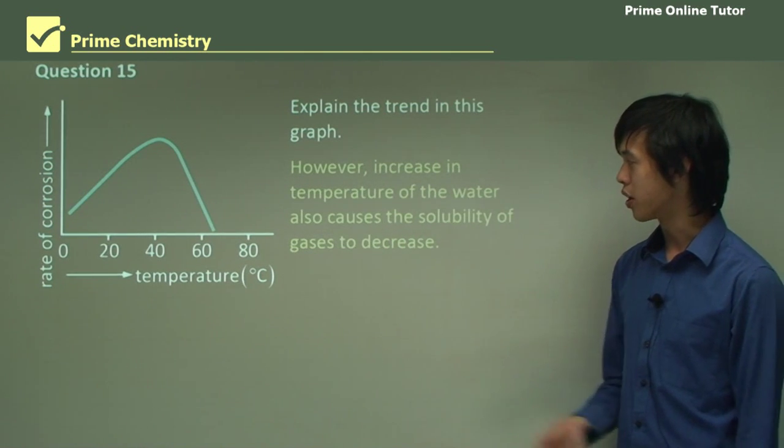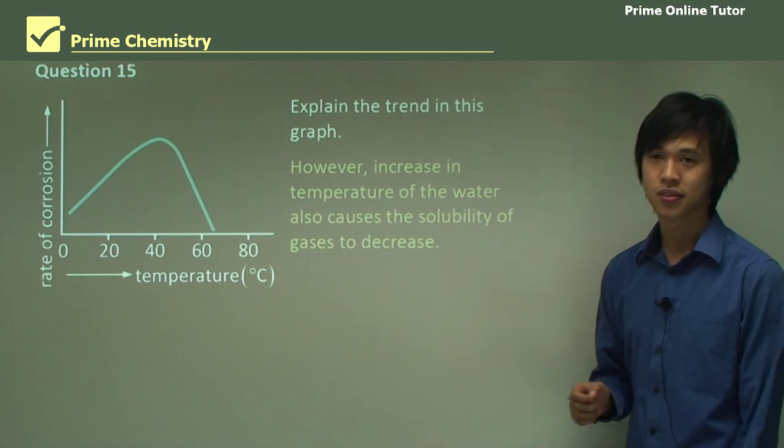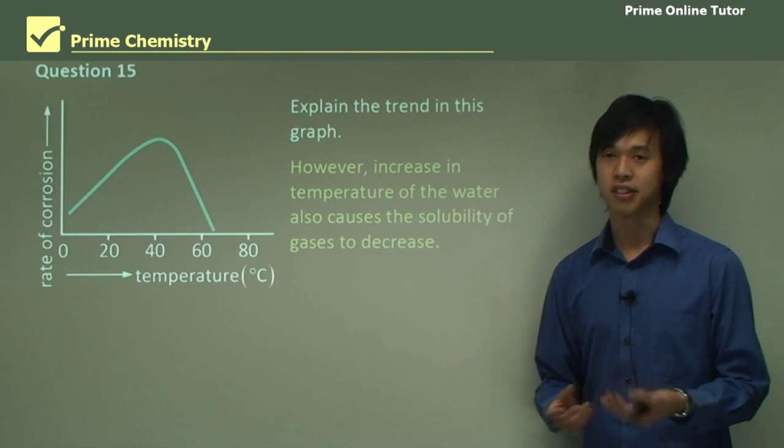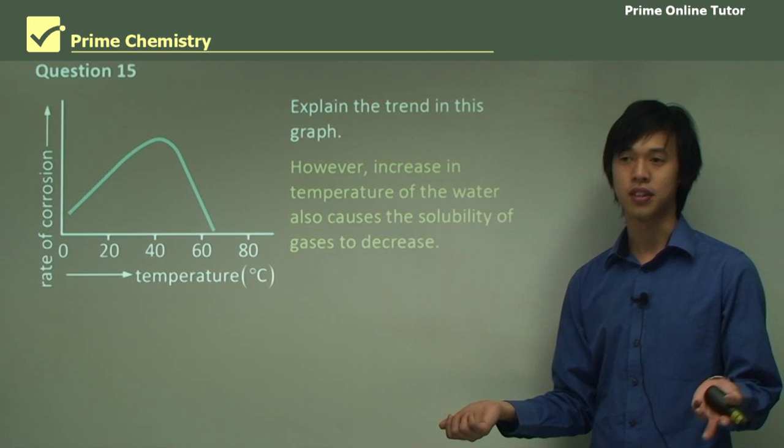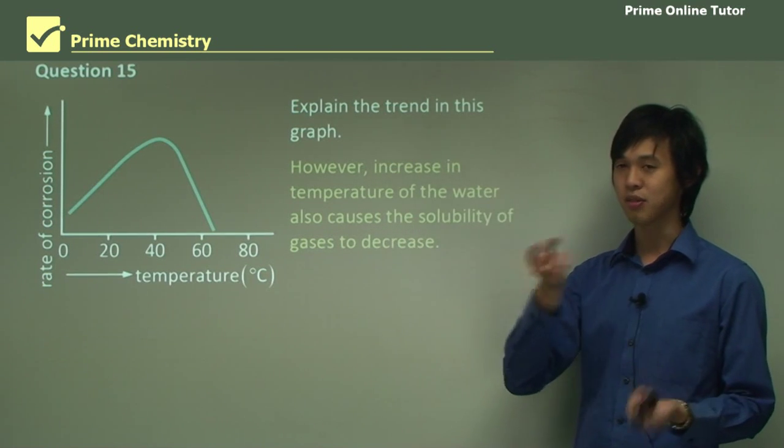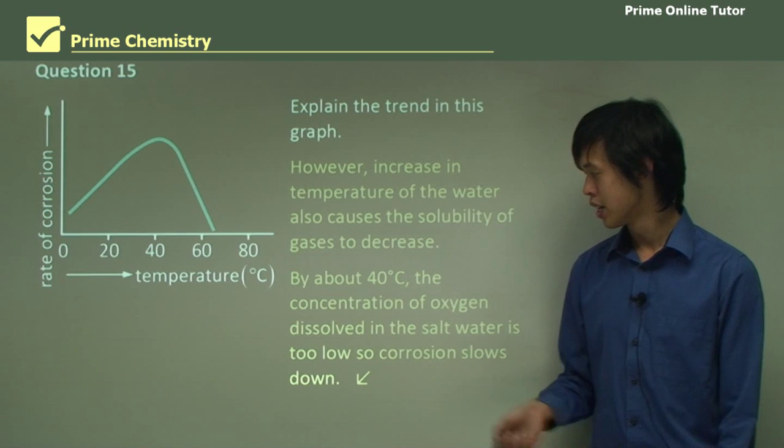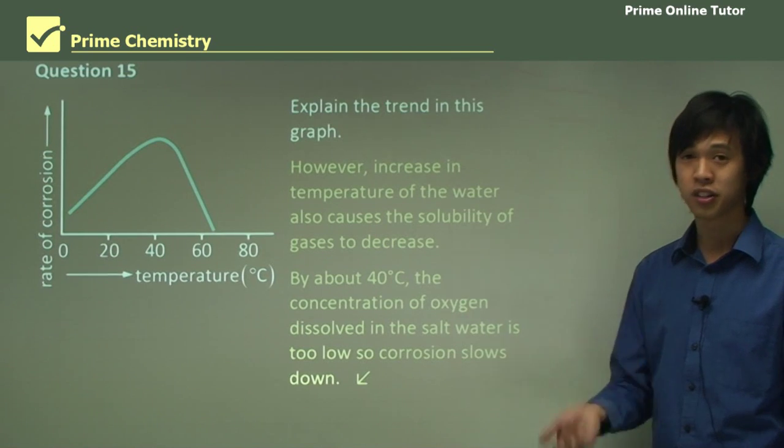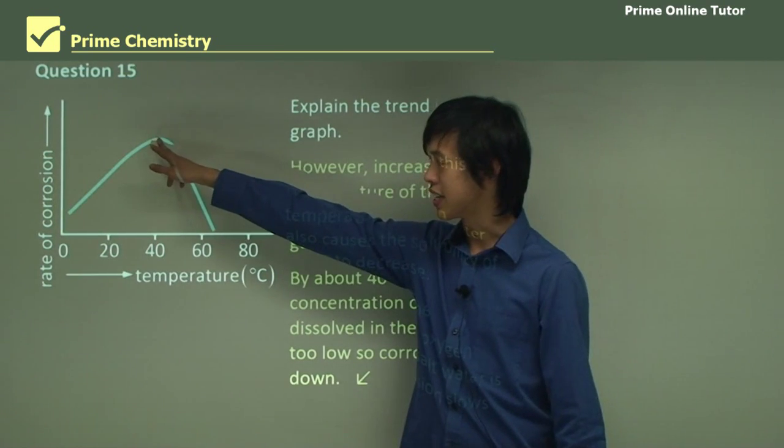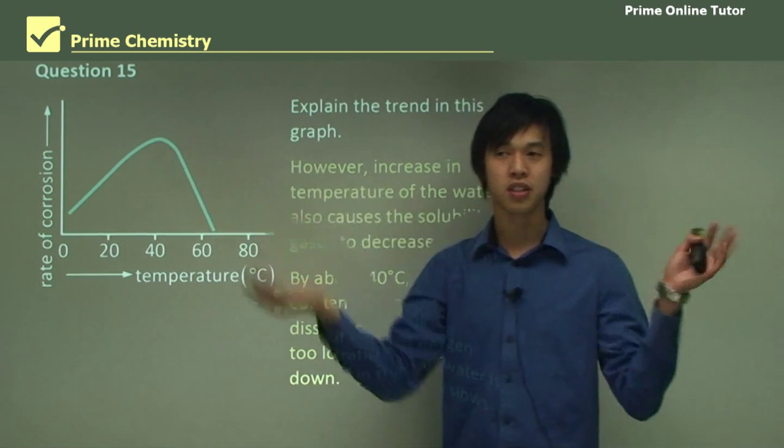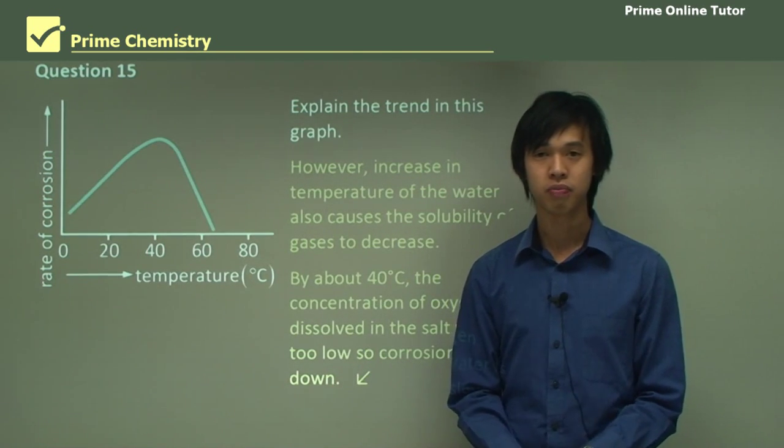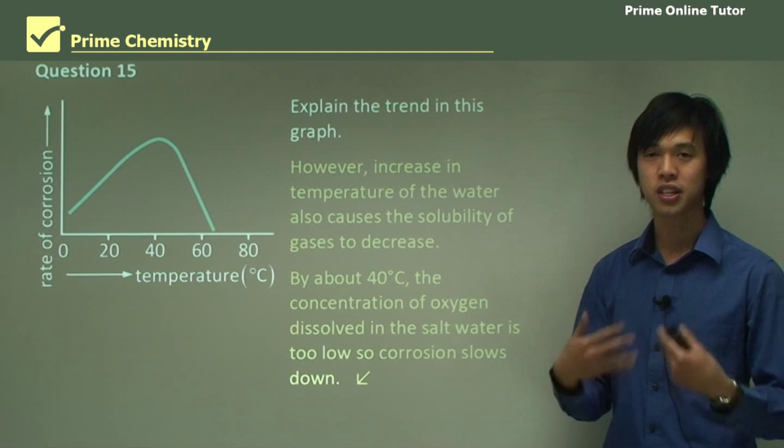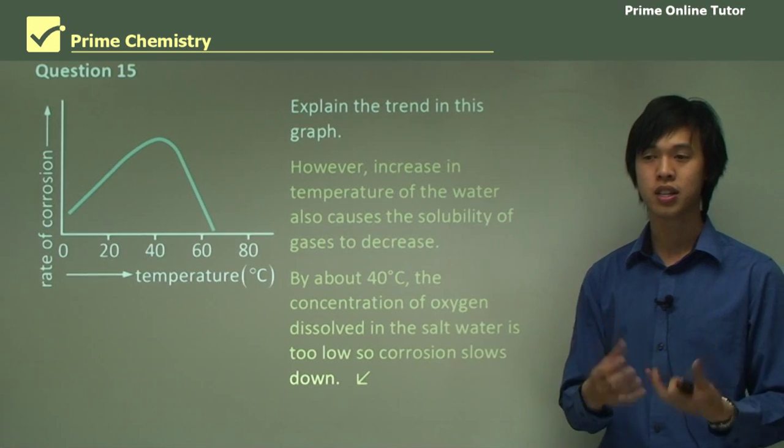However, increase in temperature of the water also causes the solubility of gas to decrease. So herein lies the great problem. As you increase the temperature, the solubility of the gas decreases as well. So you're losing gas back to the atmosphere. So you're losing reactants, which could slow your reaction rate. By about 40 degrees, the concentration of dissolved oxygen in the salt water is too low, so this corrosion slows down. So once we exceed this 40 degree mark, we're losing all this oxygen so it can't react with our metal. So there's no corrosion. So that's why it dips after 40 degrees, because it's just forcing all the oxygen and gases out of the water and back into the atmosphere.